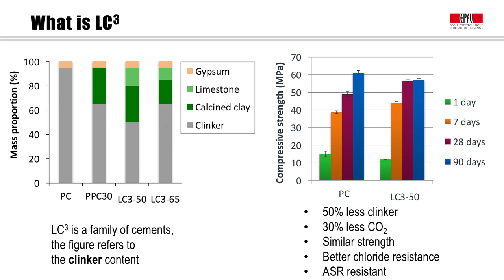By using this coupled addition of limestone together with calcined clay, we can go to much higher levels of addition. For example, in the LC350 formulation, we have 50 percent clinker, 30 percent calcined clay, and 15 percent limestone. We can see on the right-hand side that we have similar strengths developing from seven days onwards. This is what we see as the optimum level of substitution, but it's also possible to make lower levels, for example LC365. In these formulations, the figure denotes the amount of clinker. Comparing ordinary Portland cement with LC350, we have 50 percent less clinker, meaning 30 percent less CO2, taking into account the energy for calcination of the clays.